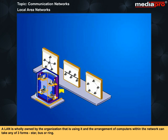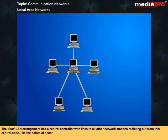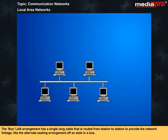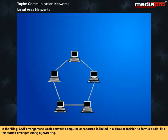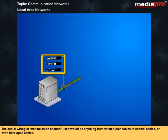A LAN is wholly owned by the organization using it, and the arrangement of computers within the network can take any of three forms: star, bus, or ring. The star LAN arrangement has a central controller with links to all other network stations radiating out from the central node. The bus LAN arrangement has a single long cable routed from station to station. In the ring LAN arrangement, each network computer or resource is linked in a circular fashion. The actual wiring used would be anything from twisted pair cables to coaxial cables or even fiber optic cables.